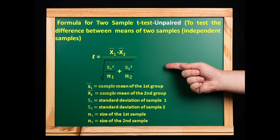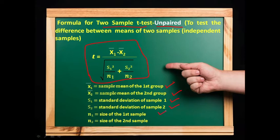Formula for two-sample unpaired T-test: used to test the difference between means of two independent samples. The formula is T = (x̄₁ − x̄₂) / √(S₁² / n₁ + S₂² / n₂), where x̄₁ and x̄₂ are sample means of the two groups, S₁ and S₂ are standard deviations, and n₁ and n₂ are the respective sample sizes.